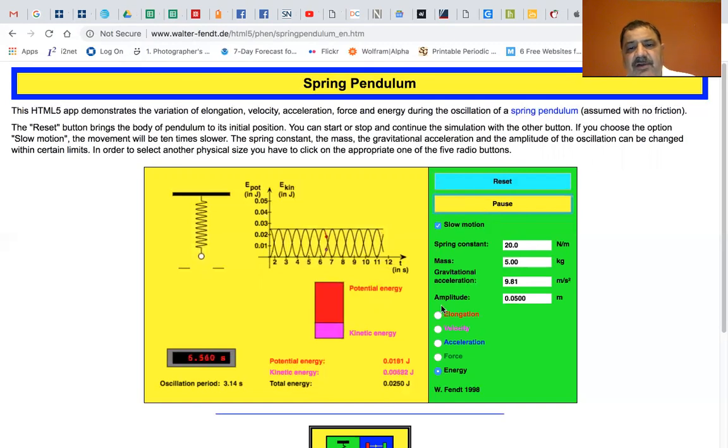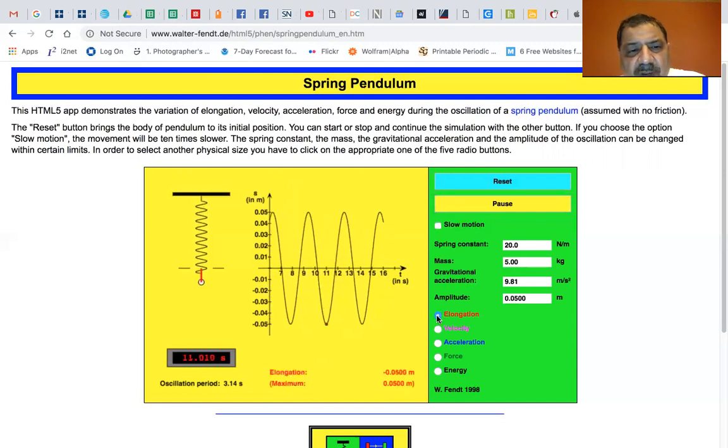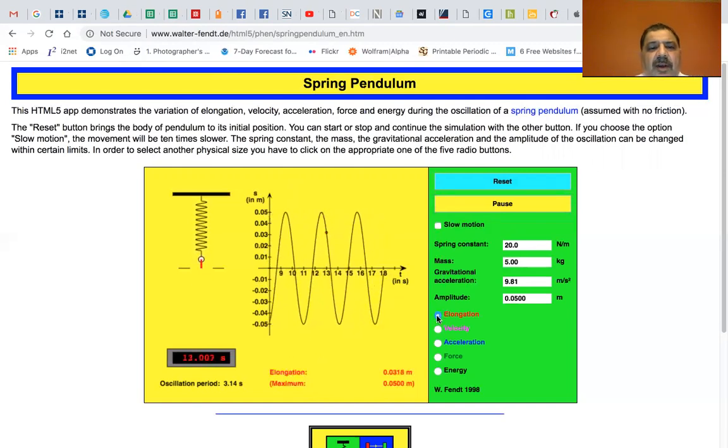Now there are other things to look at. You can look at the elongation. Let's take it out of slow motion and put it back into regular motion. The elongation is shown by a little red mark going up and down.